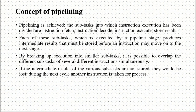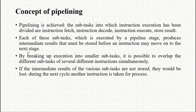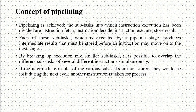The pipeline sub-tasks into which instruction execution is divided are: Instruction Fetch, Decode, Execute, and Store — four stages. Each sub-task executed by a pipeline stage produces an intermediate result that must be stored before the instruction may move on to the next stage. By breaking execution into smaller sub-tasks, it is possible to overlap different sub-tasks of several instructions simultaneously. If the intermediary results are not stored temporarily, they would be lost.